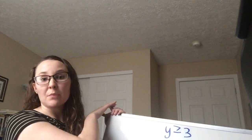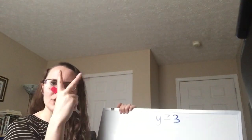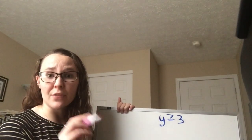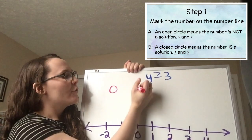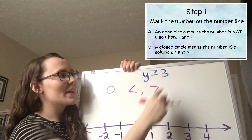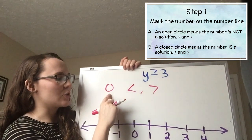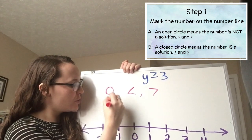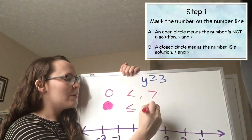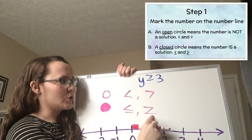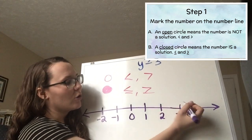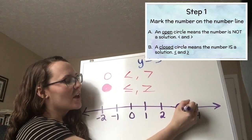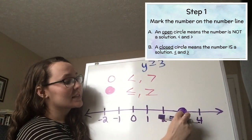Step number one is to mark the number on the number line. There are two types of circles we use. The first is an open circle — a circle that's not filled in — used for less than or greater than, when the number is not a solution. When the number is a solution, we use a closed circle, which is filled in, for less than or equal to or greater than or equal to. So for y is greater than or equal to 3, we use a closed circle because 3 is a solution.